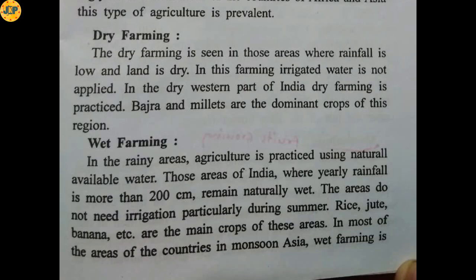Dry farming is seen in areas where rainfall is low and land is dry. Irrigated water is not applied in dry farming. In the dry western part of India, dry farming is practiced, with crops like bajra and millets being the dominant crops of this region.